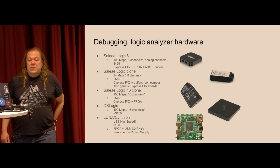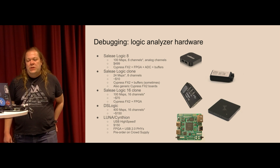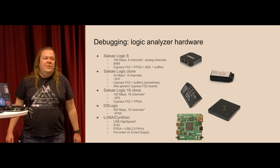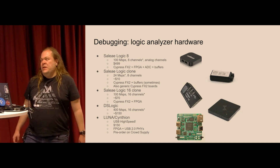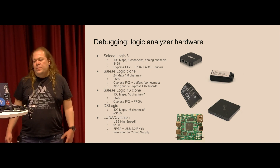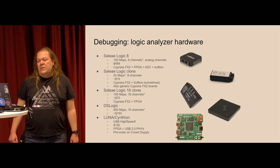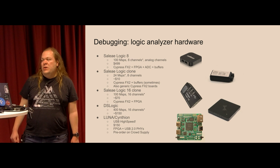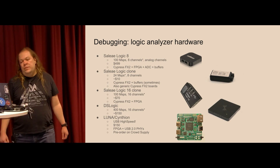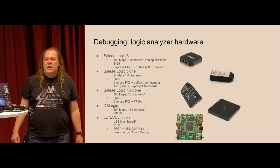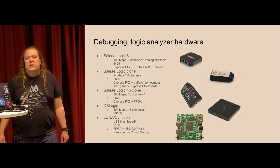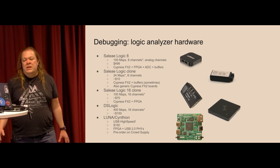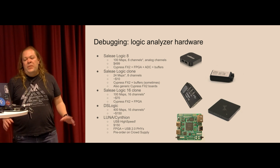The Logic 16 clone is capable of 100 MSPS, costs a bit more, and has 16 channels — also somewhat fake because you can't use all 16 at that speed, but at least three for sure. The idea is pretty much the same: Cypress FX2 plus FPGA to handle different channel counts at different speeds. Then there's DS Logic, which apart from FPGA also has on-board memory, so it can capture streams much faster than USB by storing data to memory first and then reporting to the PC.